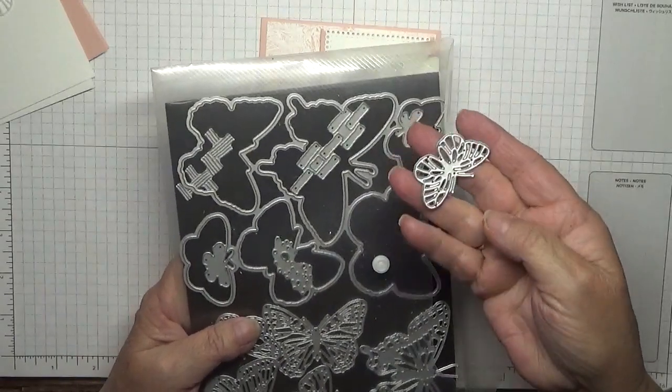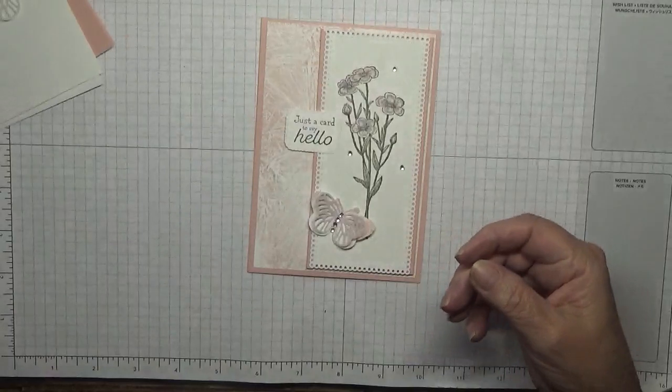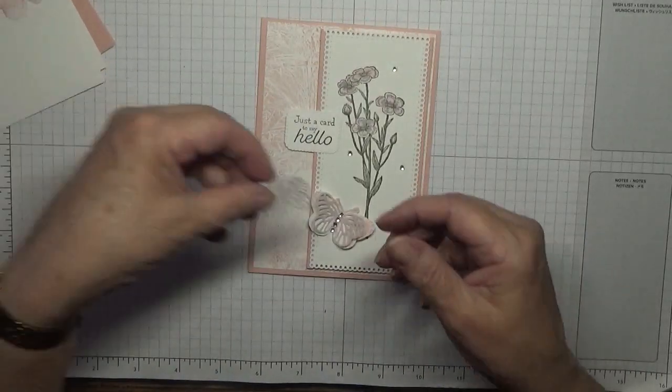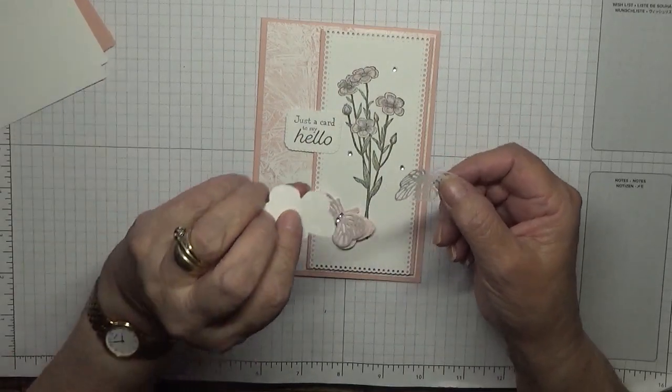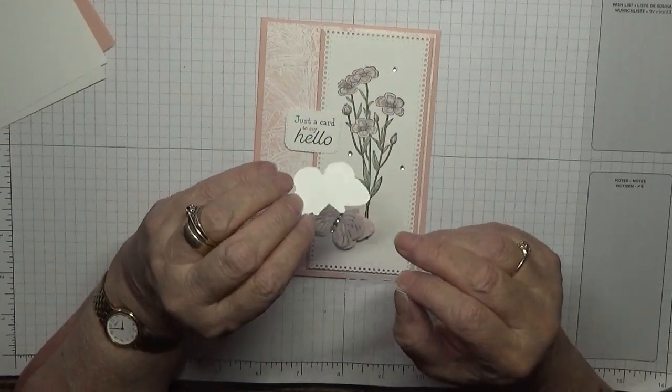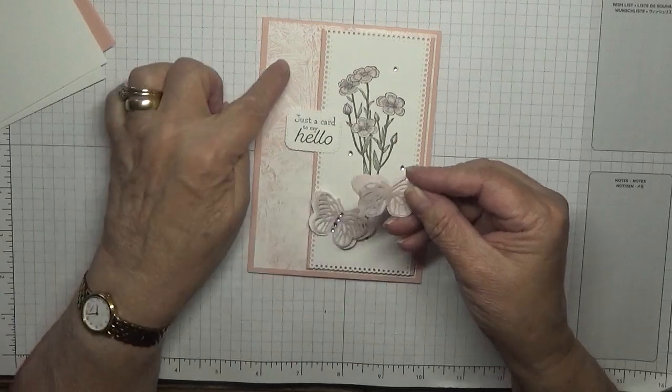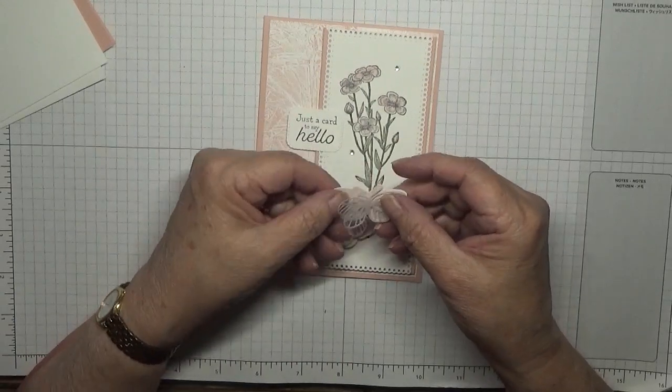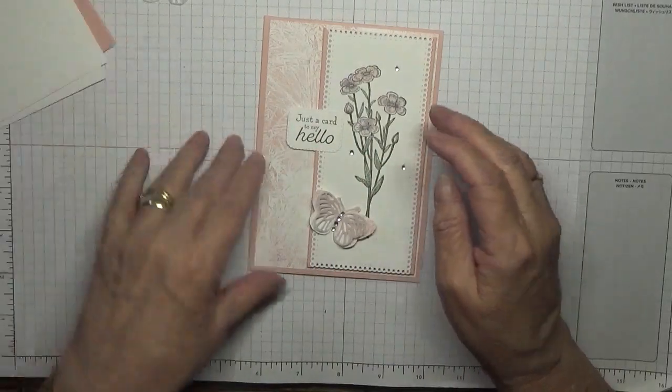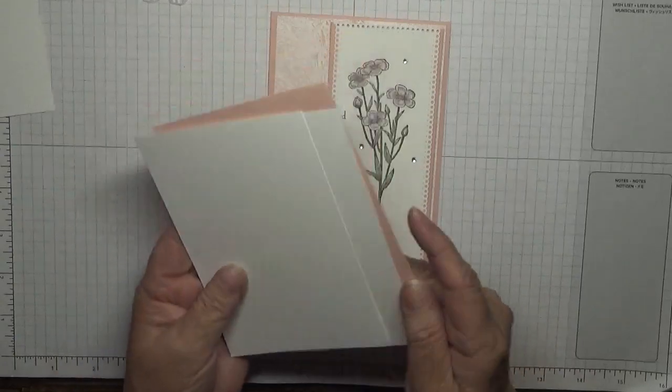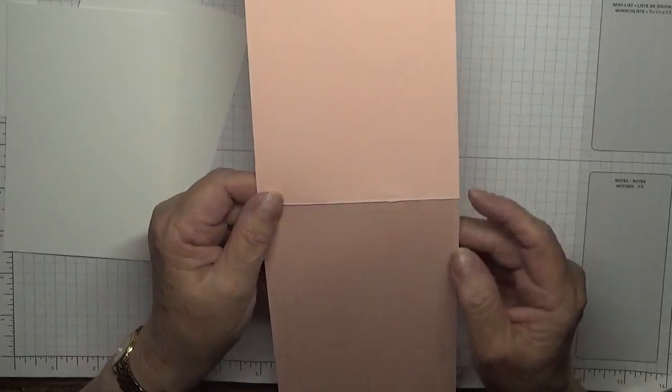I used this big die just to cut out this little butterfly there and this intricate butterfly, the smallest one. I cut them out in vellum. This is my intricate butterfly but it is cut out on the same background and I'll show you how I done the background in a minute.